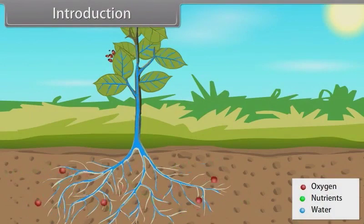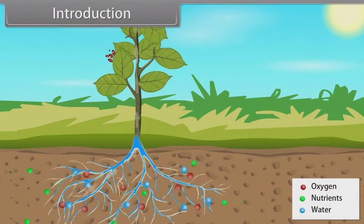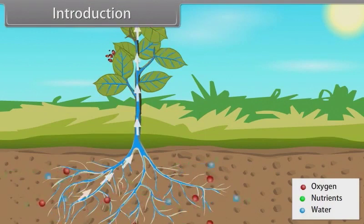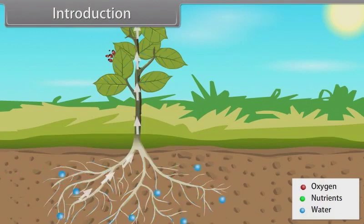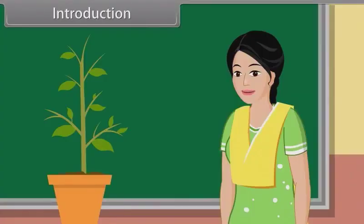There are 5 plant growth regulators. They are auxins, gibberellins, cytokinins, ethylene and abscisic acid. Now it's time to learn about plant growth and development.